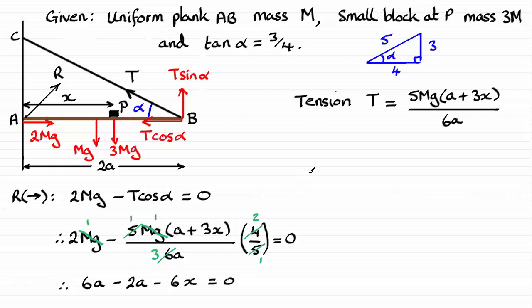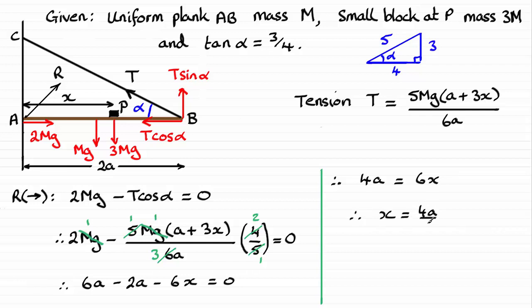Cleaning this up, you can see we've got 4a equals 6x if we rearrange that. So therefore, 4a equals 6x. Divide both sides by 6 and you get x equals 4a over 6. Reducing top and bottom by dividing by 2 gives x equals 2a over 3. And there you go.